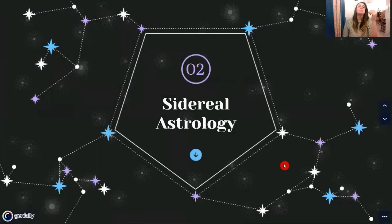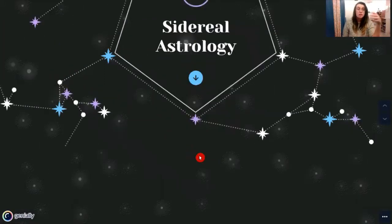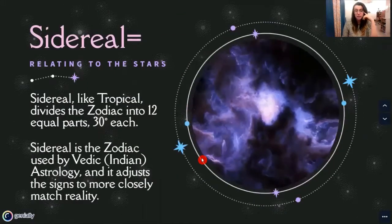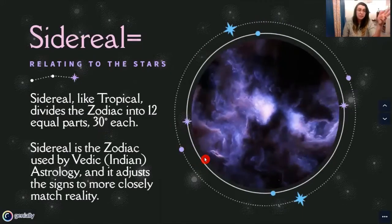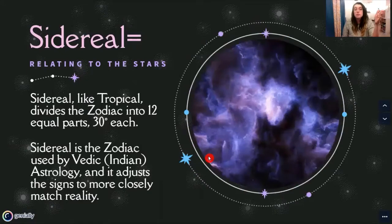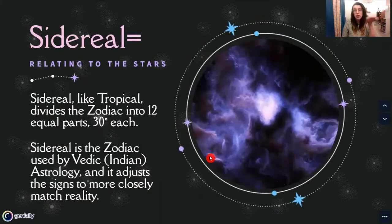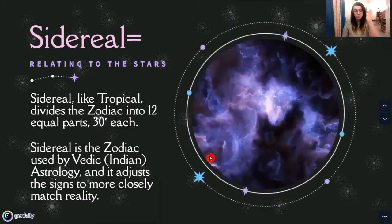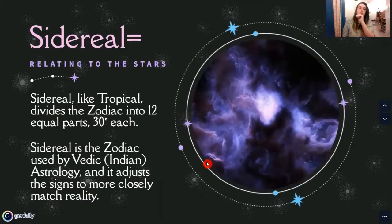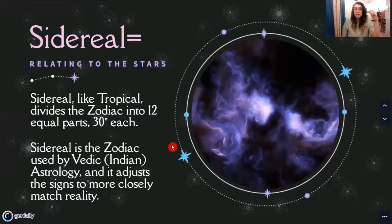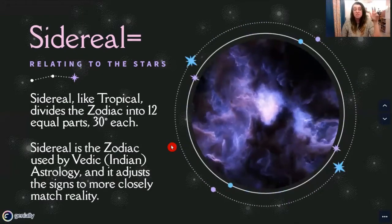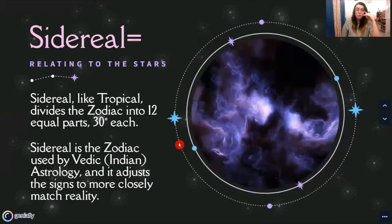So now we're going to talk about sidereal astrology. The word sidereal means relating to the stars — so from the get-go that already seems like it should make sense. Sidereal, like tropical, divides the zodiac into 12 equal parts — like a little pie divided in 12, where every sign gets an equal amount. Sidereal is the zodiac used by Vedic astrology, which is Indian astrology, and it is a very, very ancient spiritual science.